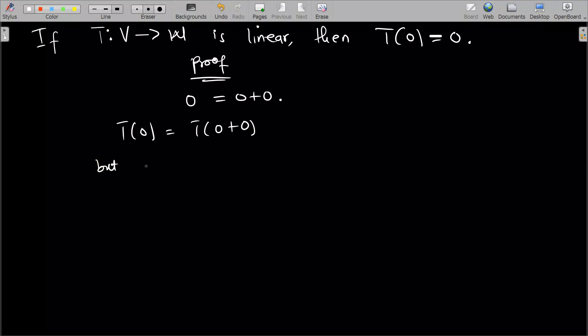But, so let me go by this. T(0 + 0) is also equal to T(0) + T(0) because T is linear, right?